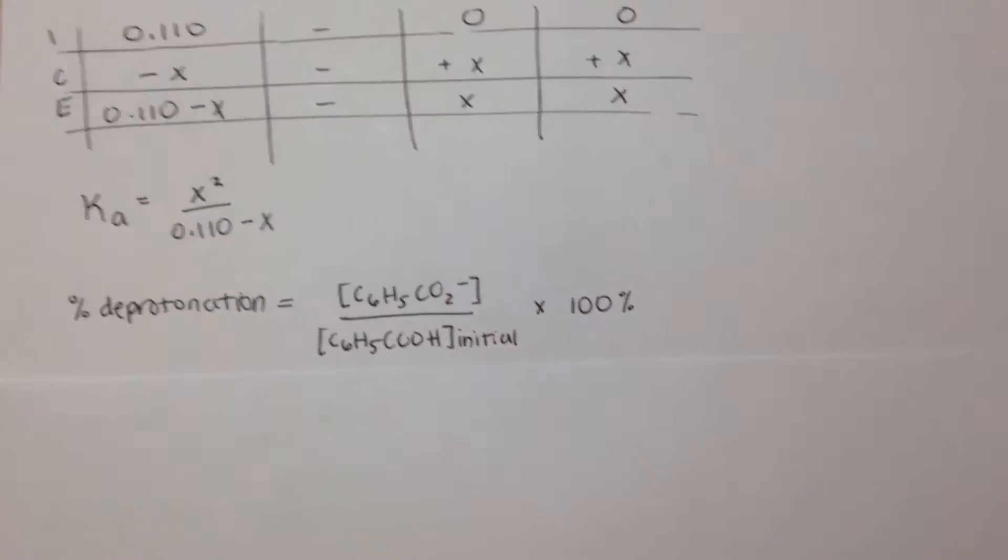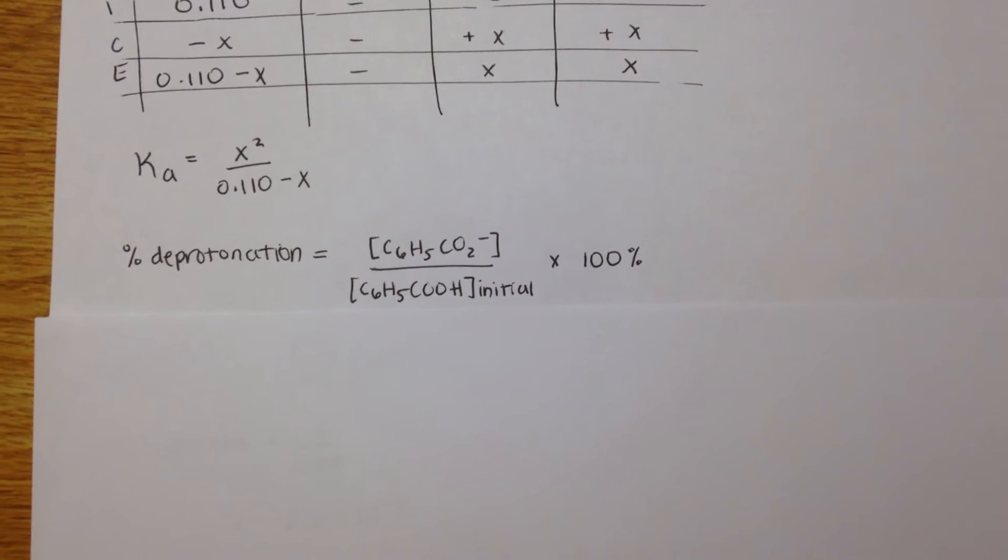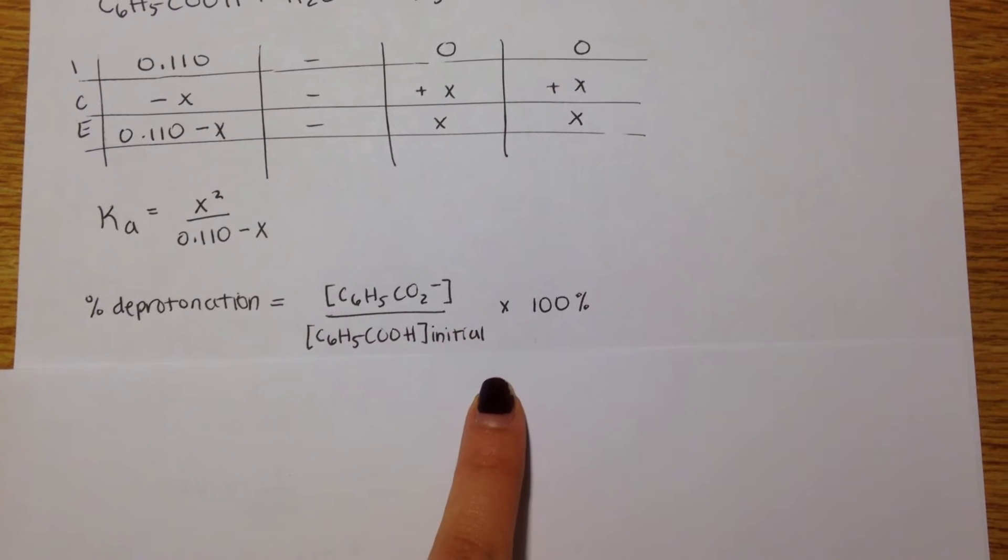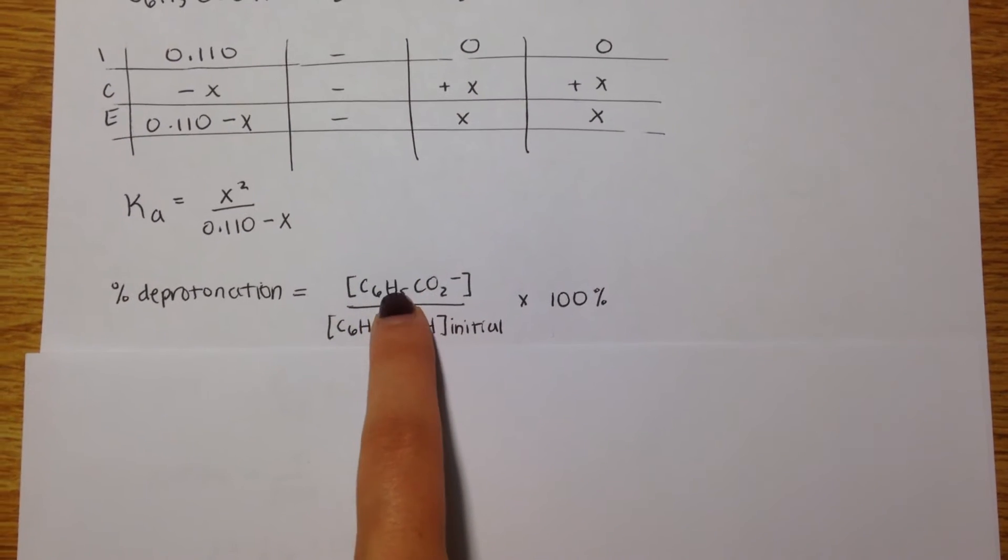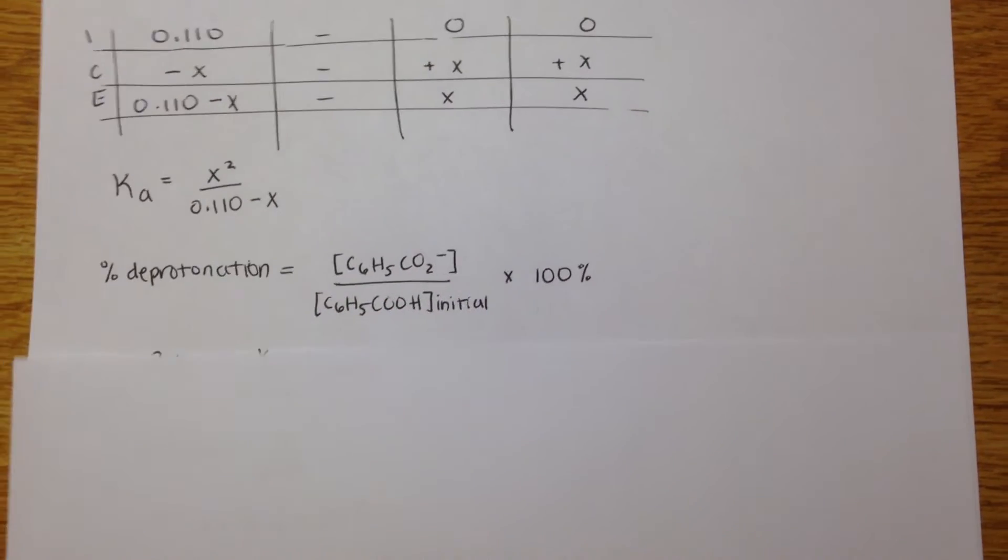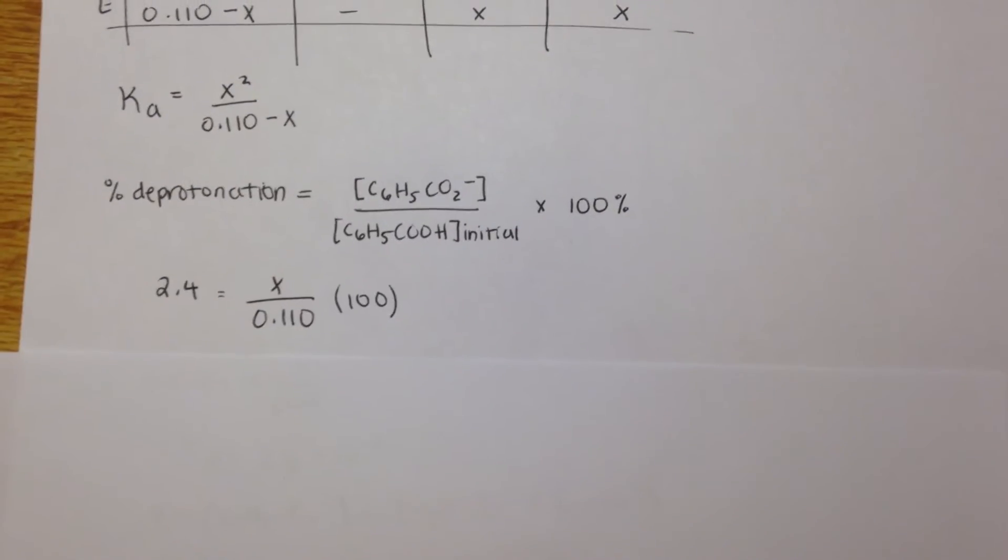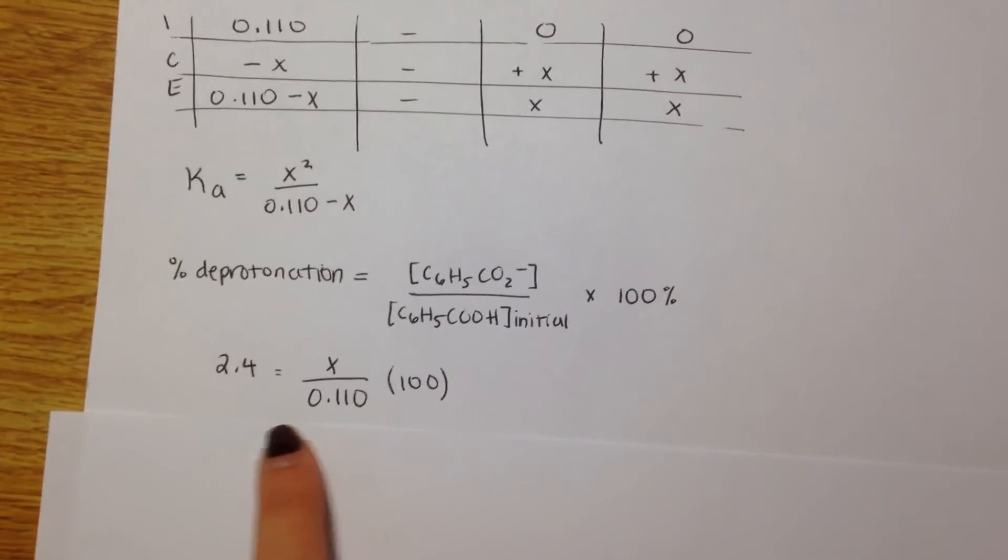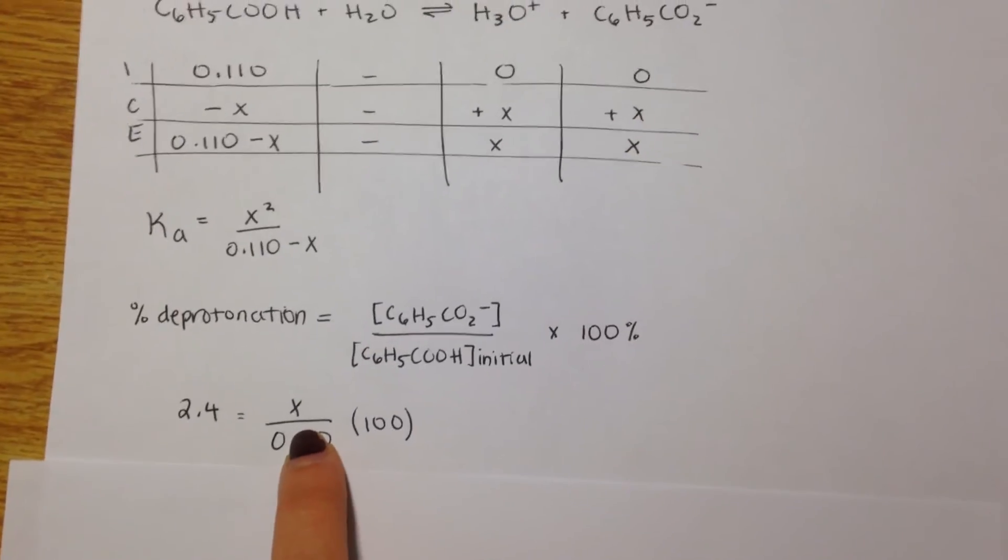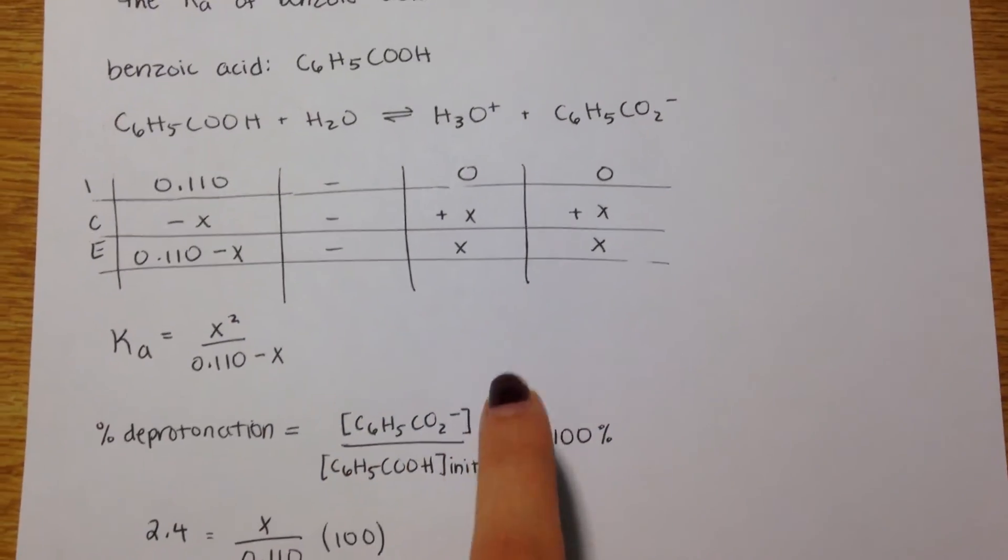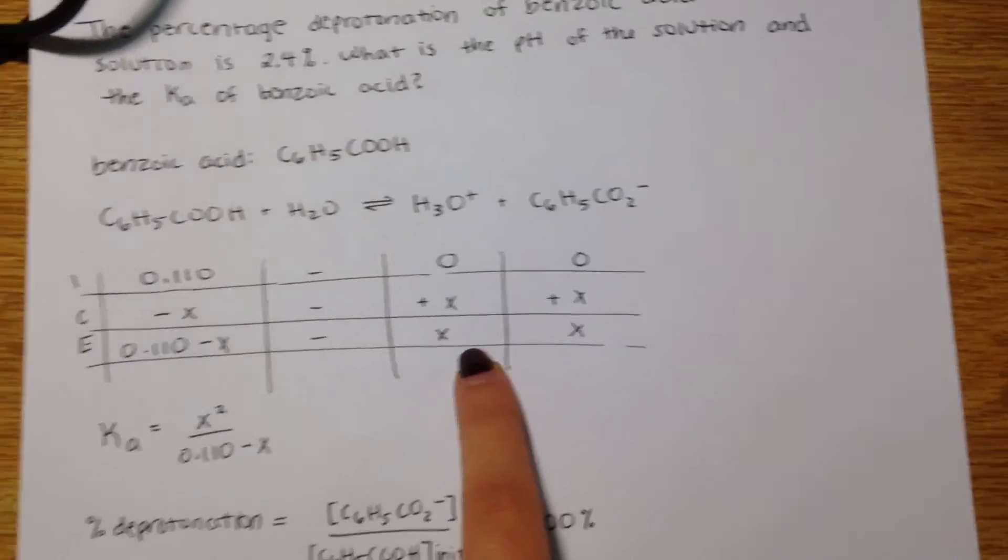So we're doing this backwards, because you already have the percent, and you want to find the concentration of the conjugate base. So 2.4 is the percentage that we're given in the problem, and x is the concentration of the conjugate base from the ice table.